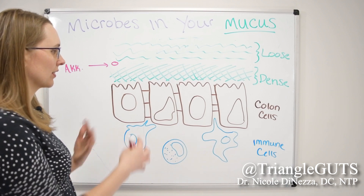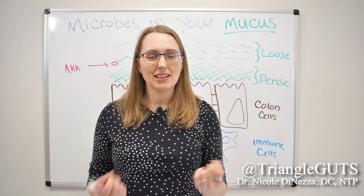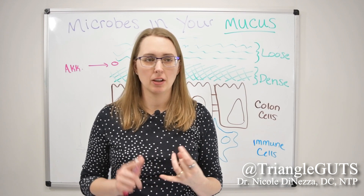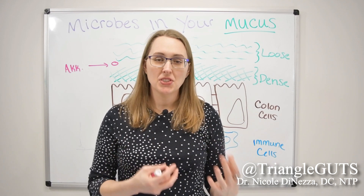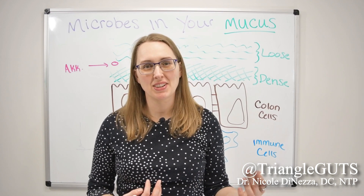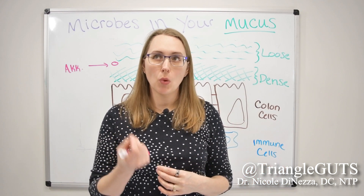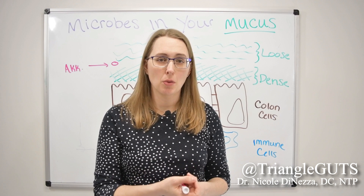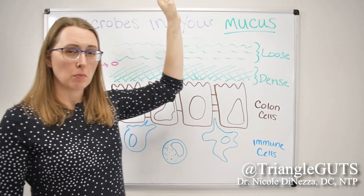Other bacteria that live in and around the mucus layer is a little tricky and mixed. I've seen some studies say that Firmicutes bacteria — things like Faecalibacterium and short-chain fatty acid producers like Blautia — are more abundant in the mucus. Some say they are less abundant. More consistently, I've found associations where Bacteroidetes and Proteobacteria are relatively enriched in the mucus lining, while Firmicutes generally stick more in the lumen.